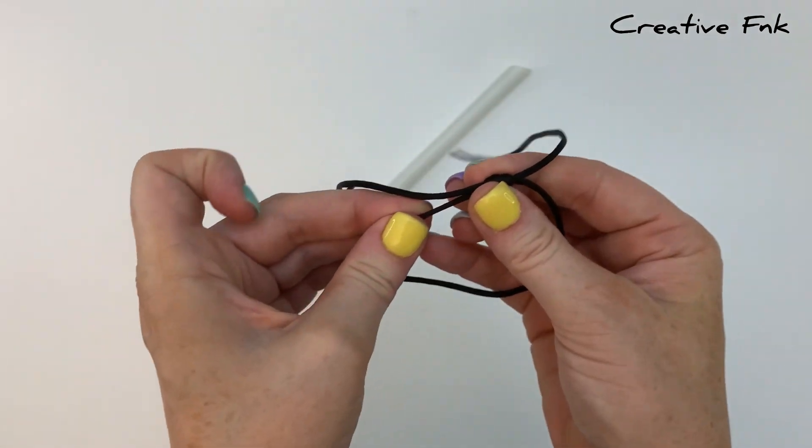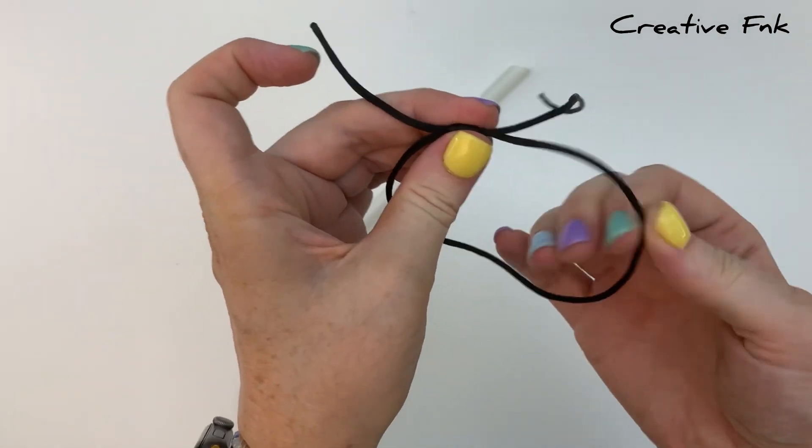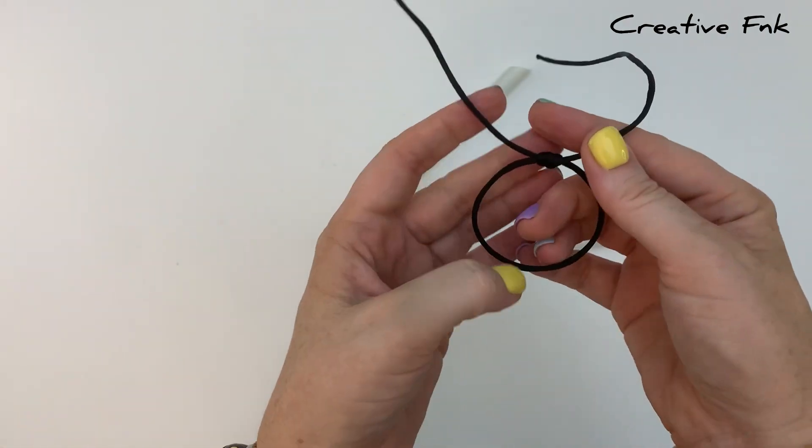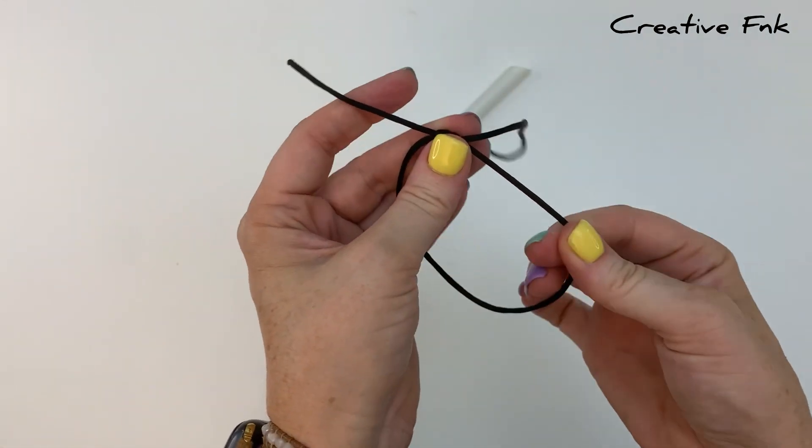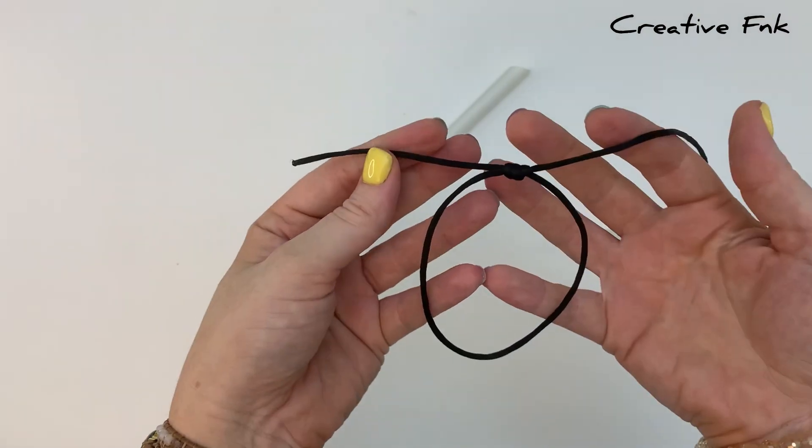You should have a nice little sliding barrel knot there. You can check your sliding mechanism, make sure it's working okay. Then you can adjust the size of your bracelet.